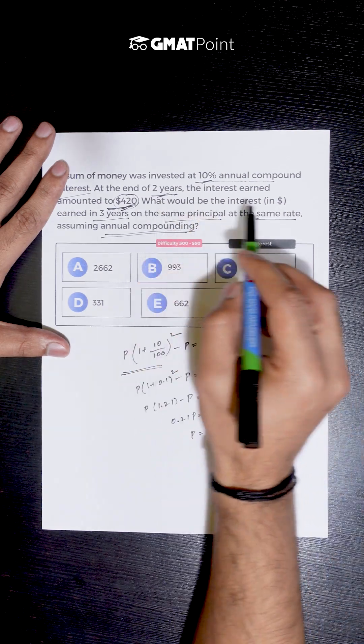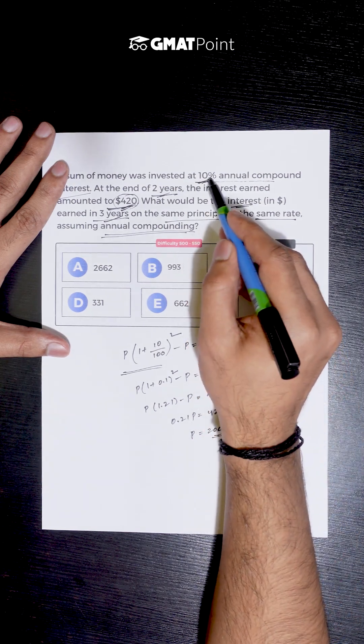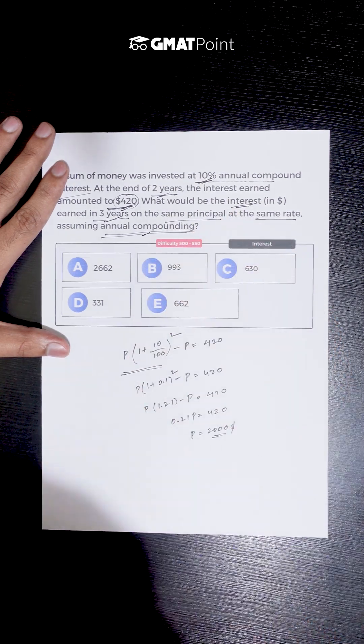Now we are asked to calculate the interest in three years if the same principal is invested at same rate in annual compounding.